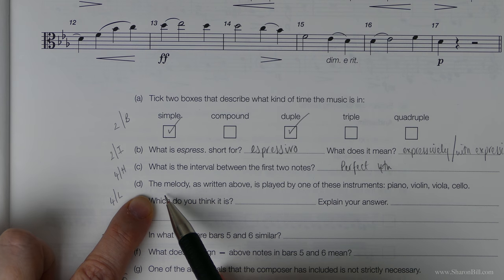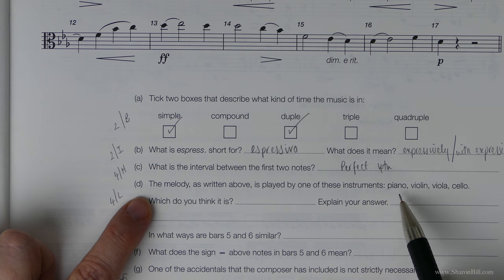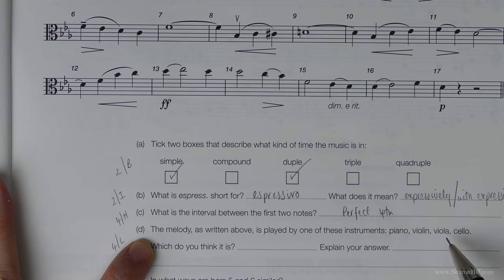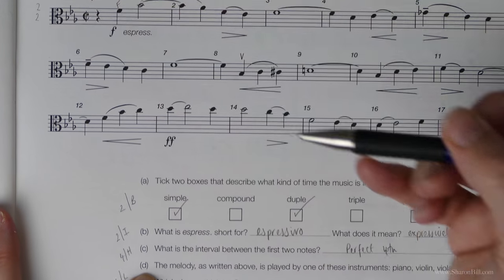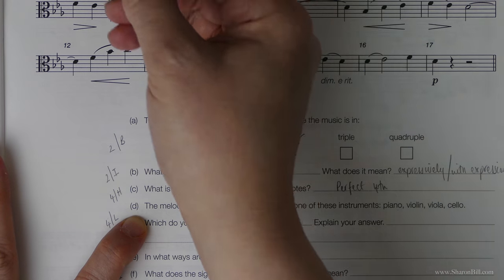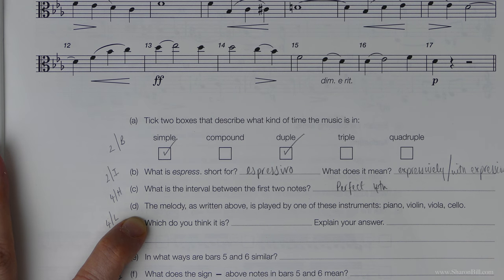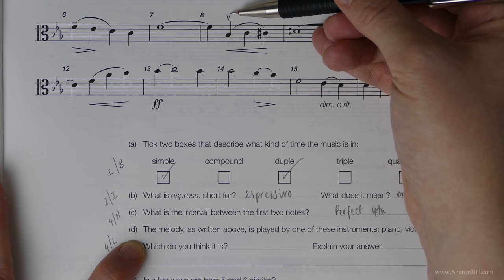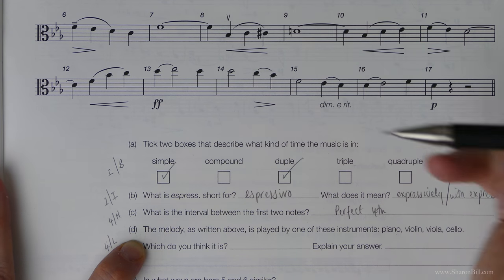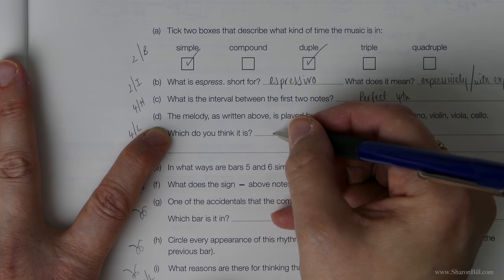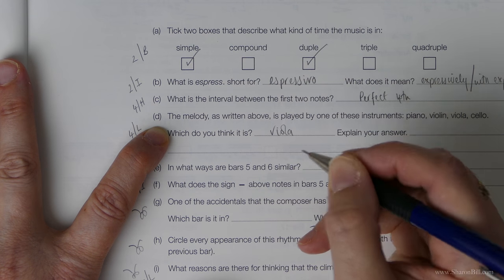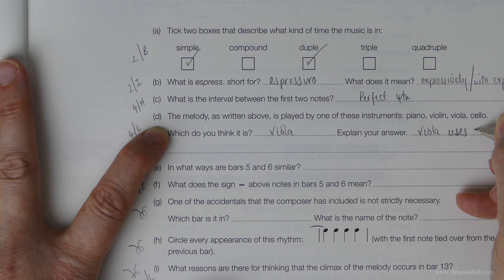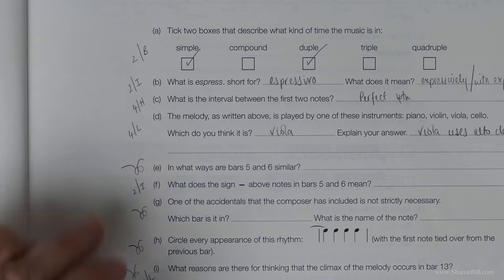The melody as written above is played by one of these instruments - piano, violin, viola, or cello. We know straight away it's for viola because it's in the alto clef. It can't be piano because the piano would be in two clefs. We know it's a string instrument with bowing marks, but it can't be the cello because it's in the wrong clef. We need to say viola uses alto clef.